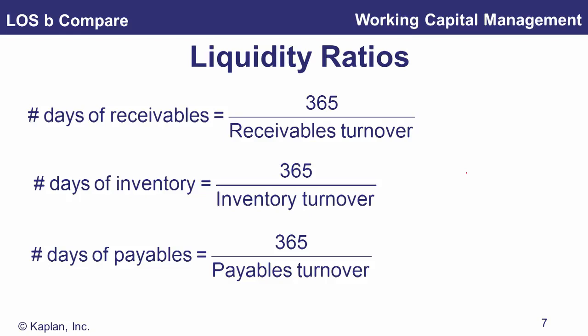Ideally, receivable days should be low — you want customers to pay quickly. For inventory, a higher number means more cash is tied up in stock. For payables, you'd want a higher number because if your supplier isn't charging interest, that's free cash — but not so long that you risk damaging the supplier relationship. Knowing these days figures lets us calculate the operating cycle and cash conversion cycle.